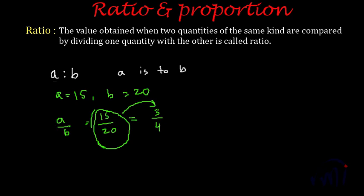Always use ratios in their simplest form. To convert any ratio to its simplest form, divide both the first term and the second term by the highest common factor of both values. This is one very important rule to remember.